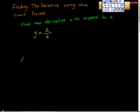Here's another finding the derivative using the limit process. I guess let me start with the good news. The good news is that pretty soon we introduce some rules of finding derivatives that will help you stay away from this. But this is the proof of why it works. So let's go through this one. It says find the derivative with respect to t of y equals 2 over t.